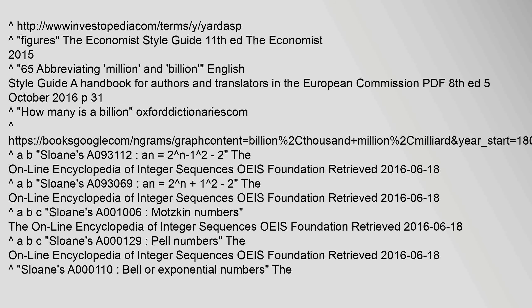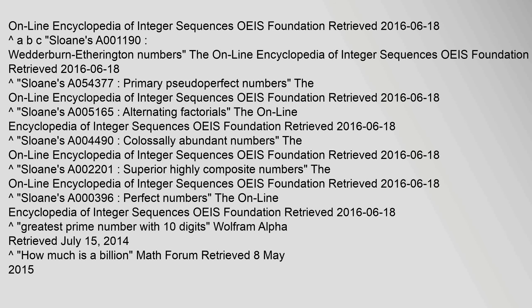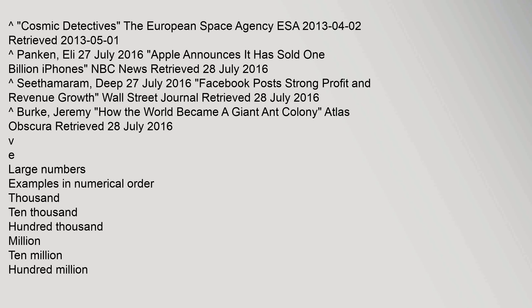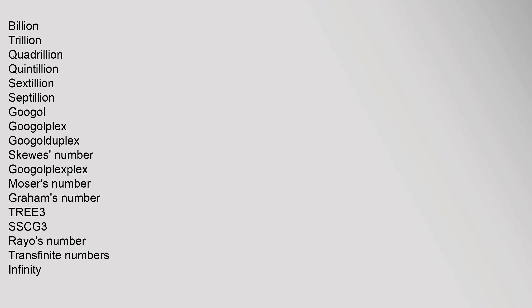References include: The Economist Style Guide, 11th edition (2015); the Online Encyclopedia of Integer Sequences (OEIS Foundation, retrieved 18 June 2016); and Cosmic Detectives by the European Space Agency (ESA), 2 April 2013. Related large number topics include: Billion, Trillion, Quadrillion, Quintillion, Sextillion, Septillion, Googol, Googolplex, Moser's Number, Graham's Number, TREE(3), SSCG(3), and Transfinite Numbers.